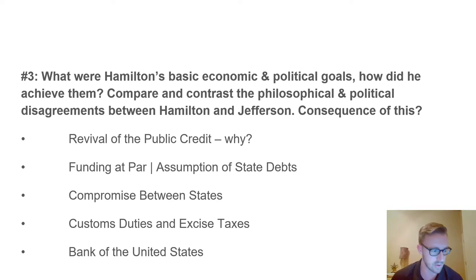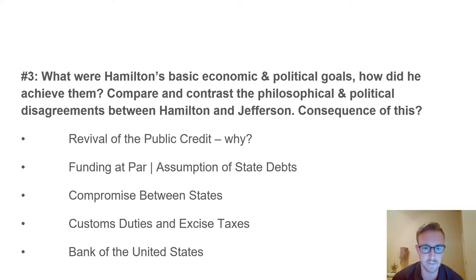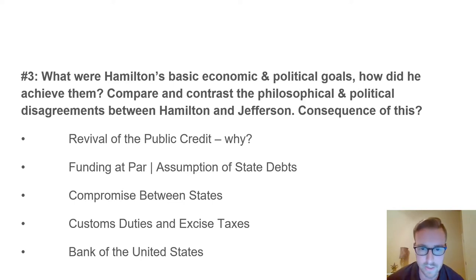Hamilton also saw it was important for the government to find ways to raise revenue—one of the problems with the Articles of Confederation. He moved into imposing taxes on certain imports, creating the first tariff law, which brought in significant revenue to the federal government. He also passed an excise tax on a few items, including whiskey, to bring in additional money.